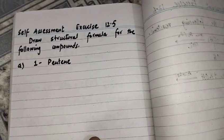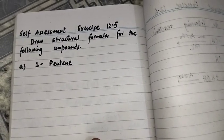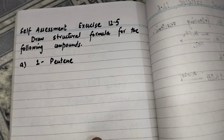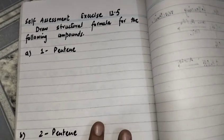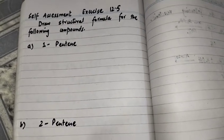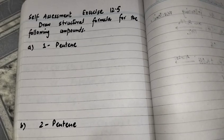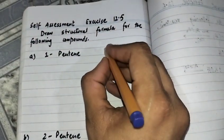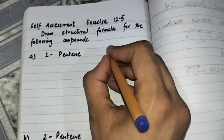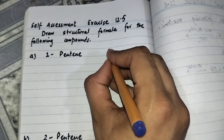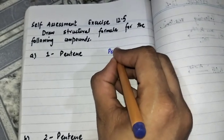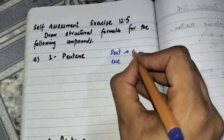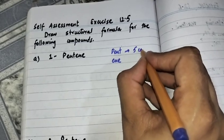Bismillahirrahmanirrahim. Self-assessment exercise 12.5: draw a structural formula for the following — one-pentene and two-pentene. First we have to know that there are two parts of pentene: one is 'pent' and the other is 'ene'. Pent represents five carbon atoms.